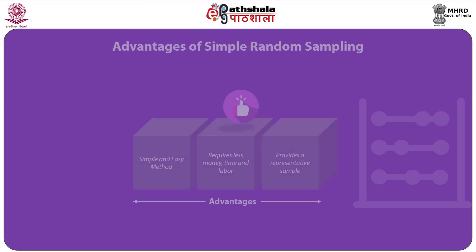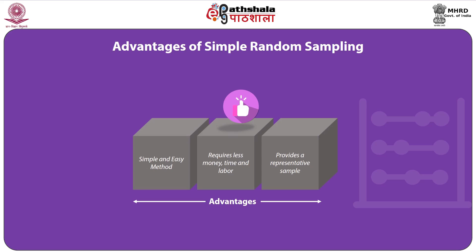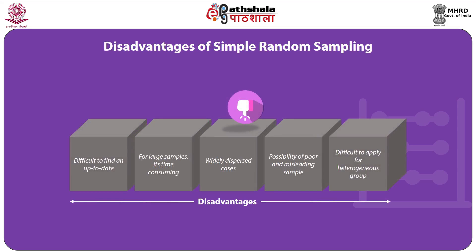The advantages of simple random sampling are that it is a simple and easy method, requires less money, time and effort, and provides a representative sample. Disadvantages include: it is difficult to find an up-to-date list of all units; in the case of large sample selection, the numbering and ordering of every unit is time-consuming and expensive; there is a possibility of cases being too widely dispersed, increasing cost and time; there is a possibility of obtaining a poor and misleading sample; and it is difficult to apply to heterogeneous groups.